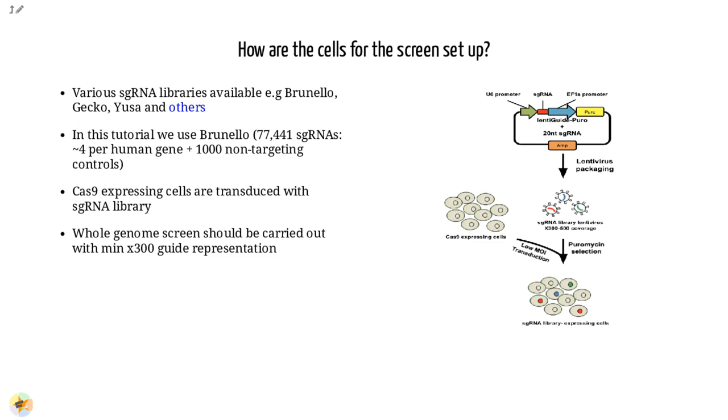Cells expressing the Cas9 enzyme are transduced with the guide RNAs at a low multiplicity of infection, or MOI, aiming for a minimum starting representation of 300 for each guide, and puromycin is used to remove cells without guides.